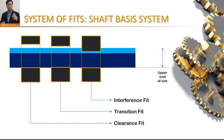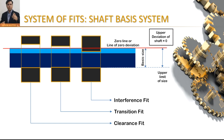The shaft basis system is exactly opposite to the hole basis system. Here our shaft size is constant and we vary hole sizes in order to get different fits — clearance, transition, and interference. In the shaft basis system, the zero line coincides with the upper limit of size of the shaft, so basic size and upper limit of size of shaft are equal. That's why the upper deviation of the shaft is zero in the shaft basis system.